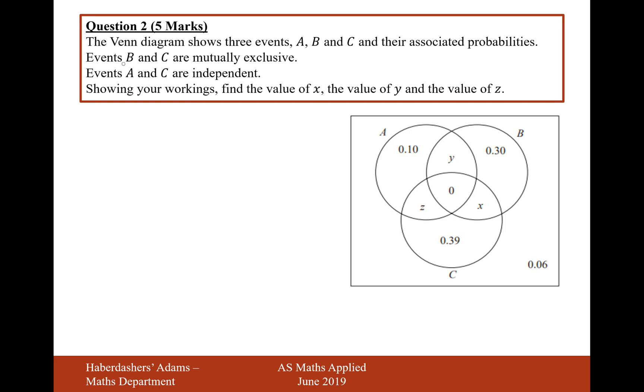Okay, so first of all, let's use this first piece of information here, that B and C are mutually exclusive. Now, if B and C are mutually exclusive, then the overlap between B and C must be equal to 0. So therefore, X must equal 0. And that's because the two events B and C are mutually exclusive.